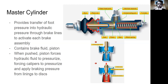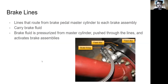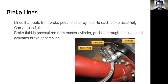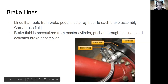The pressurized fluid gets forced through the brake lines all the way down onto the calipers and brake assemblies. It applies braking pressure from the linings inside the calipers to the rotating discs, which slows down the aircraft. Brake lines are the lines that route from the brake pedal master cylinder to each brake assembly. They carry the brake fluid.